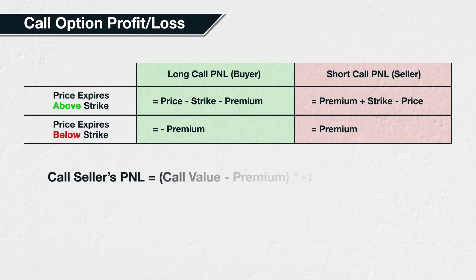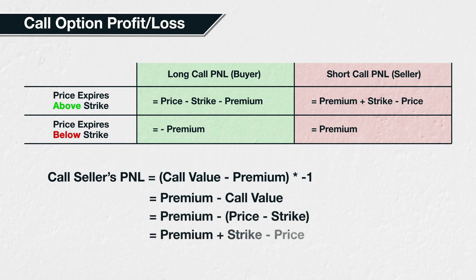The seller's P&L is of course just the negative of this. So the seller's P&L can be calculated as premium minus call value, which equals premium minus the quantity price minus strike, which simplifies to premium plus strike minus price.